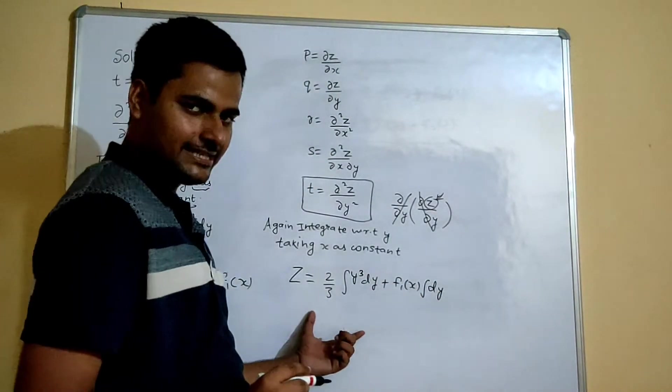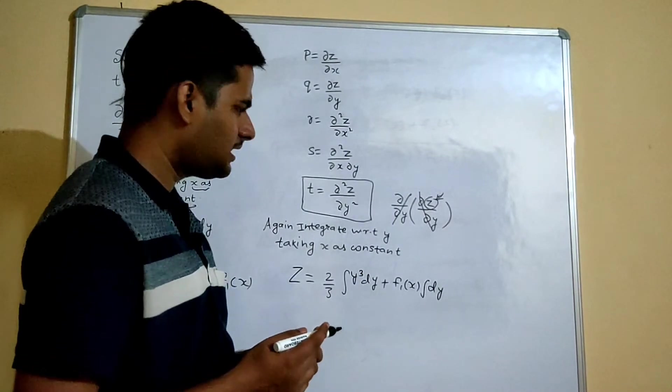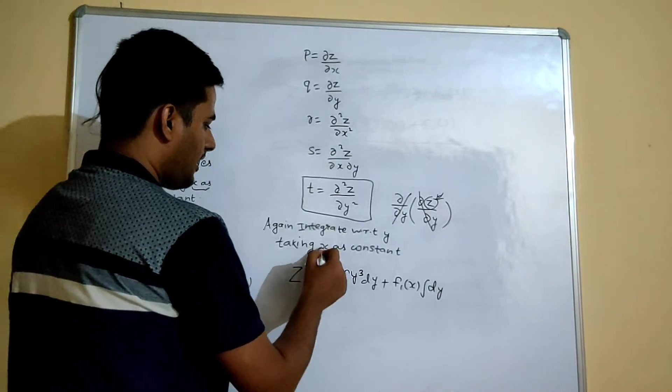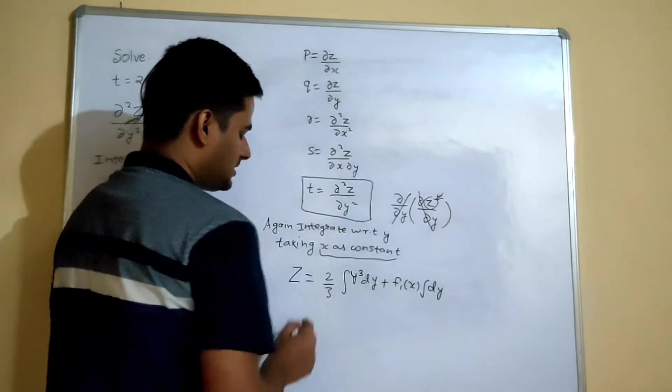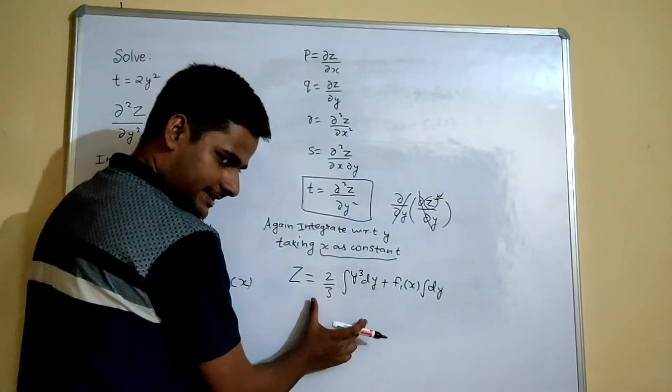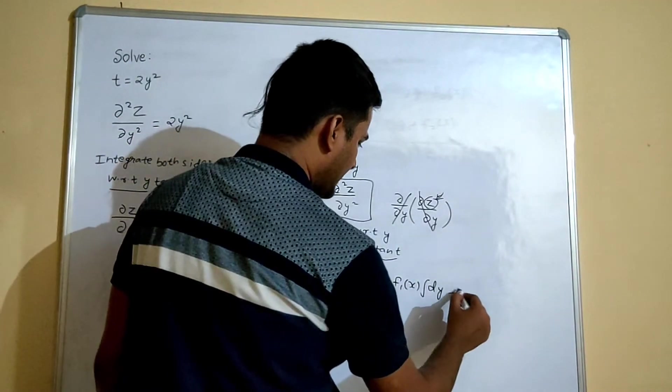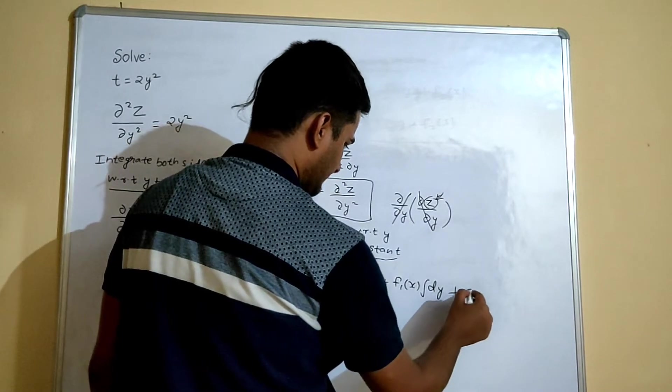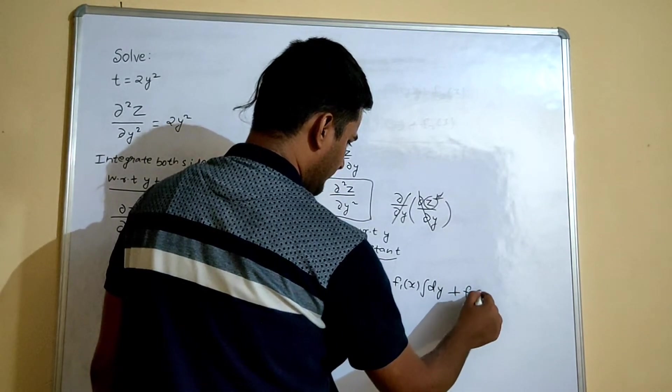And now in this integration also you will get a constant. Now again because x is treated as constant, so the constant of integration in this step will again be in the form of x, F2(x).